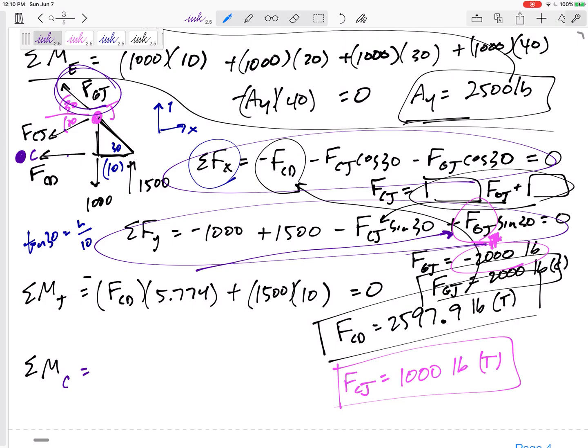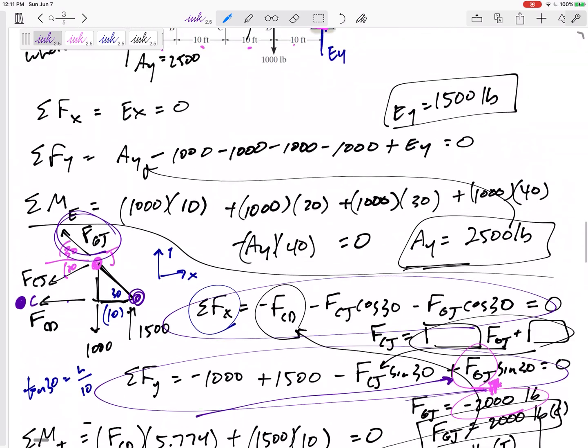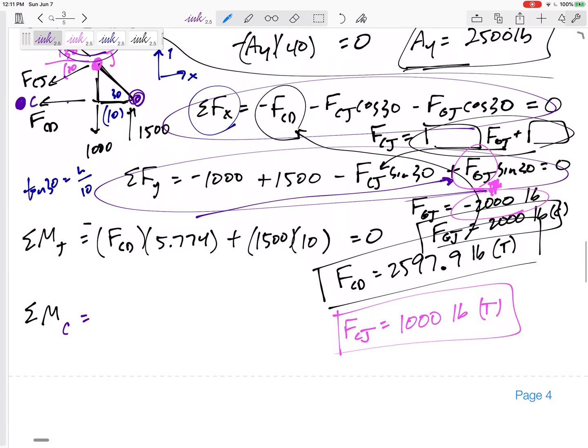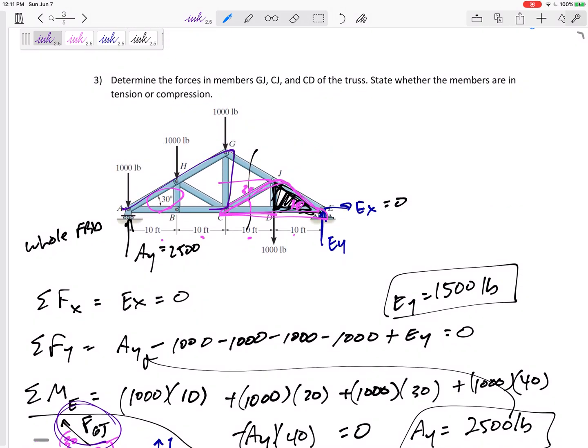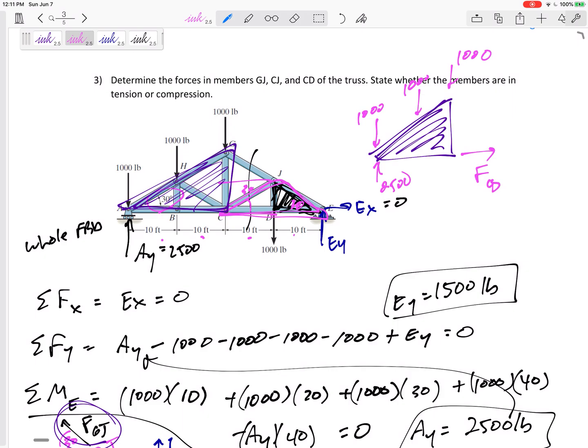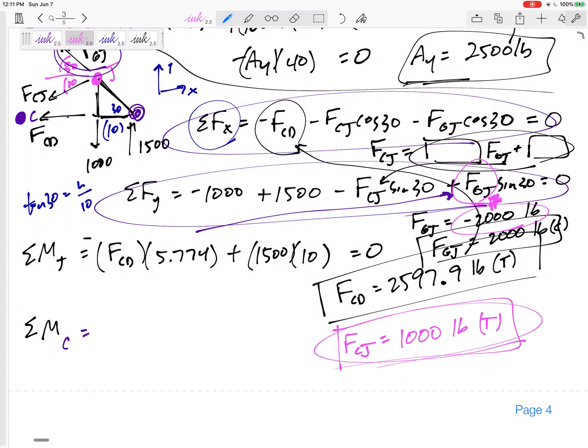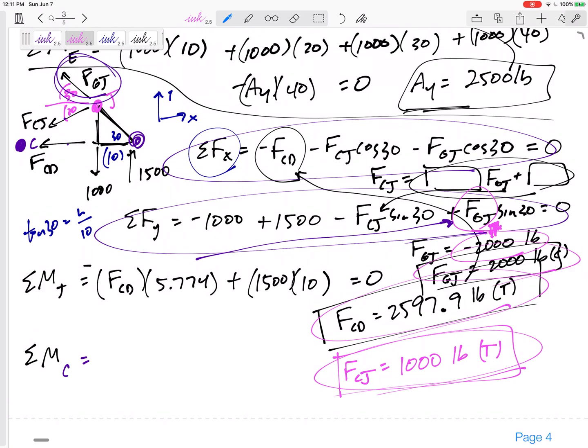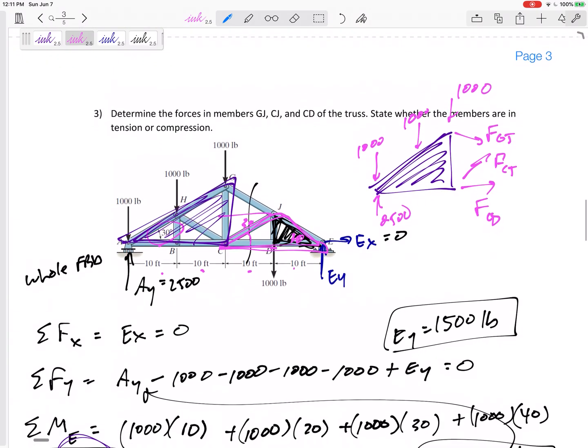So one other option, and maybe to double-check your work. Let's sum your moments about C, just to see what my answers would be. You could also sum your moments about E, which maybe that's actually the easiest way to do it. Another way to double-check your answer is to come and what if you had kept this left side of it. What if you had kept this left side of it, and we had 2,500, we had 1,000, another 1,000, another 1,000, then what is FCD, what is FCJ, FGJ? You should still get the exact same answers. 1,000 tension, 2,597 tension, 2,000 compression, and double-check me with those to make sure I'm telling you the right answers for this.